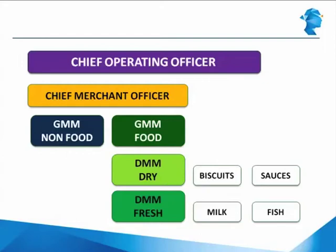Hence, this is what a typical merchandising hierarchy looks like. Starting from the bottom, the buyers report to the DMMs, who report to the GMMs, who report to the chief merchandising officer handling all categories, who in turn reports to the chief operating officer handling all operations including distribution and store operations. This was about buying.